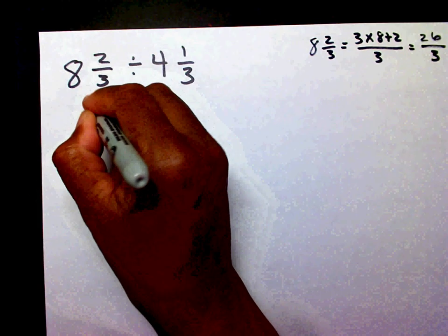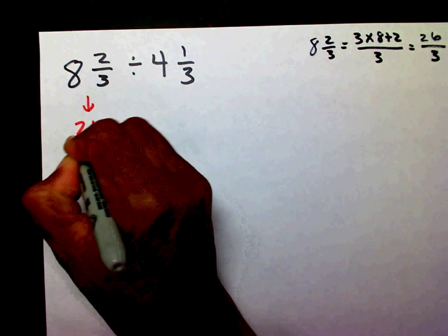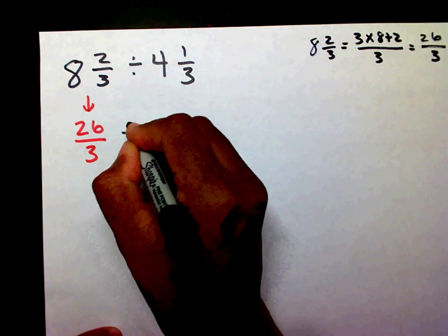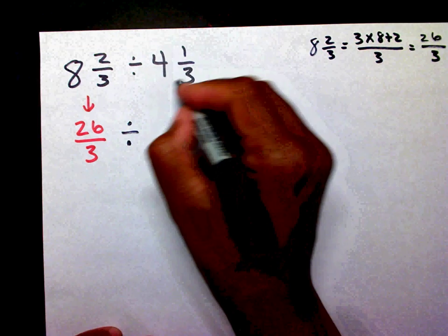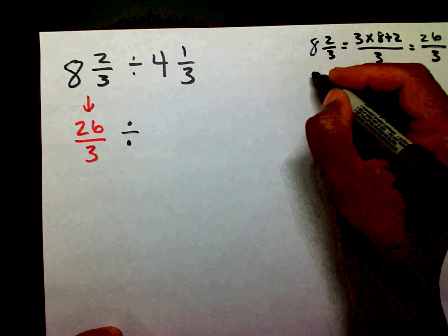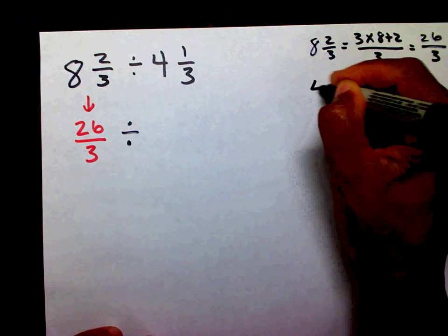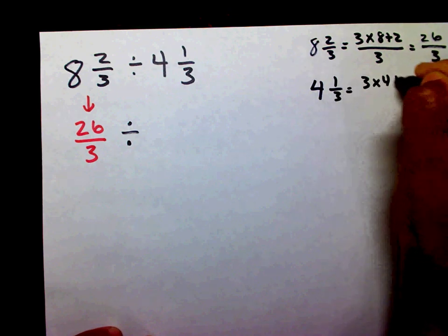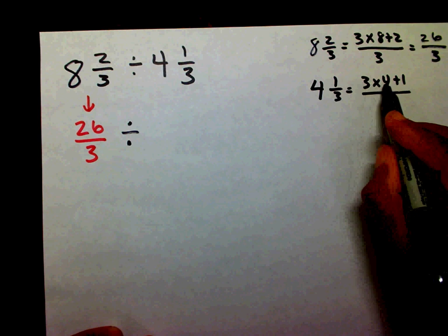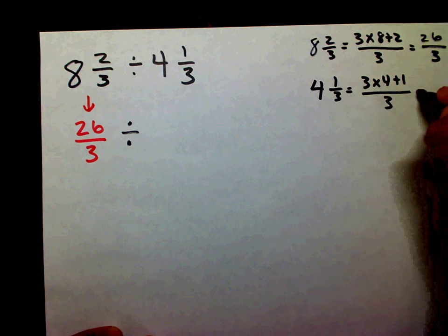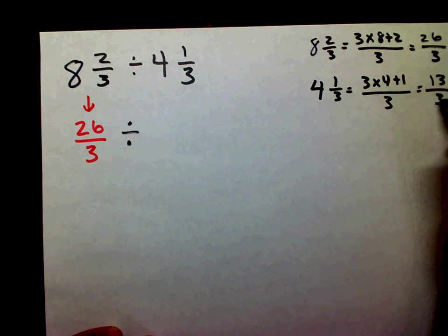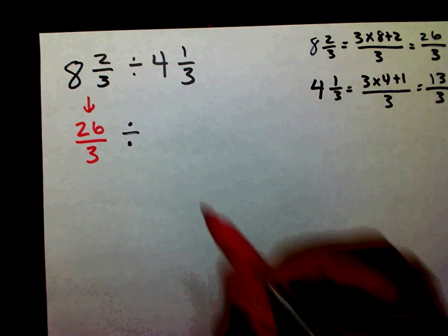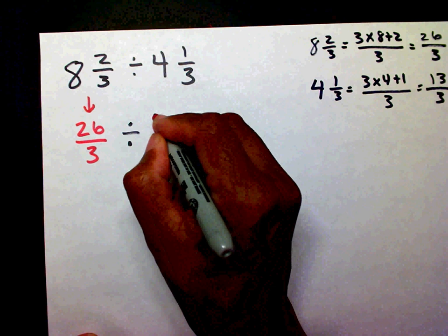So instead of writing eight and two-thirds, I can write twenty-six-thirds, divided by — I need to change four and one-thirds into an improper fraction. Four and one-thirds equals three times four plus one. Three times four is twelve plus one is thirteen-thirds. So instead of writing four and one-thirds, I can write thirteen-thirds.